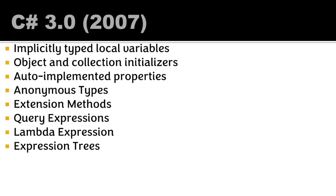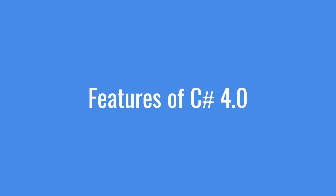These were the key features of 3.0, which came in 2007. We also had partial methods — a method that spans more than one file and can be defined in multiple places.